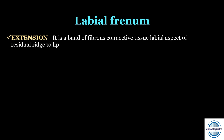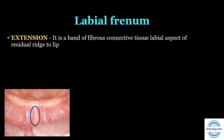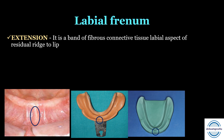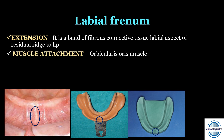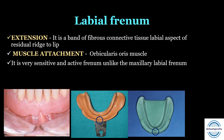The first landmark is the labial frenum — a band of fibrous connective tissue on the labial aspect of the residual ridge to the lip. It appears as a notch in the impression called the labial notch, and we can locate it on the cast. The muscle attachment is the orbicularis oris muscle, which mainly influences this frenum. It is a very sensitive and active frenum unlike the maxillary labial frenum, and it should be nicely relieved in the denture.